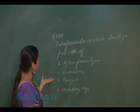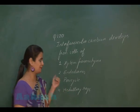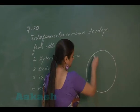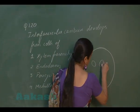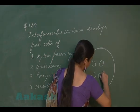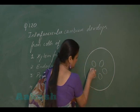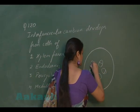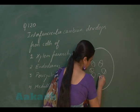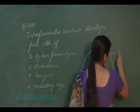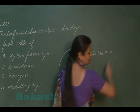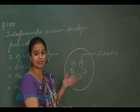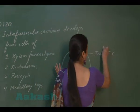In question number 120, we have to see how interfascicular cambium is formed. Consider a transverse section of a dicot stem — in the dicot stem, the vascular bundles are arranged in the form of a ring. Between the vascular bundles there is a cambium known as intrafascicular cambium — the cambium present within the vascular bundle. This cambium is primary in origin.